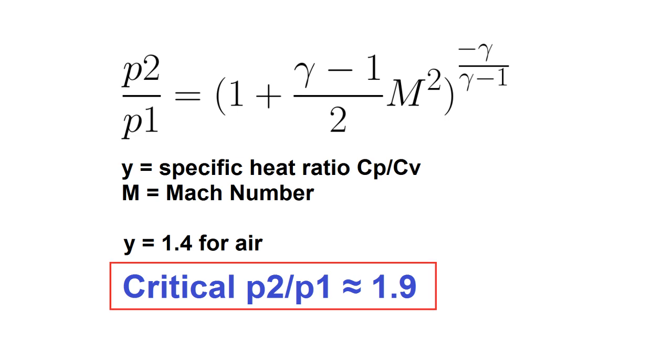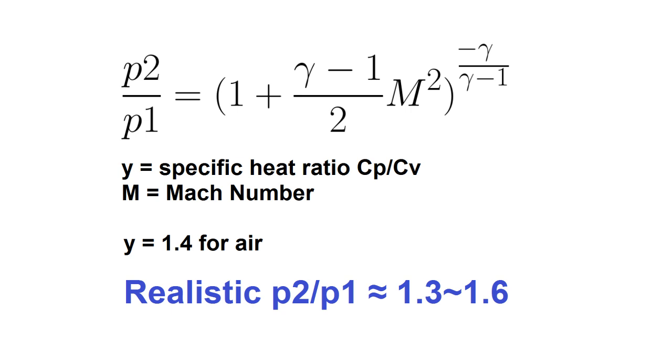So the absolute maximum ratio per stage is about 1.9 for air, but in most turbines you'll find ratios between say 1.3 and 1.6, depending on how they're designed.